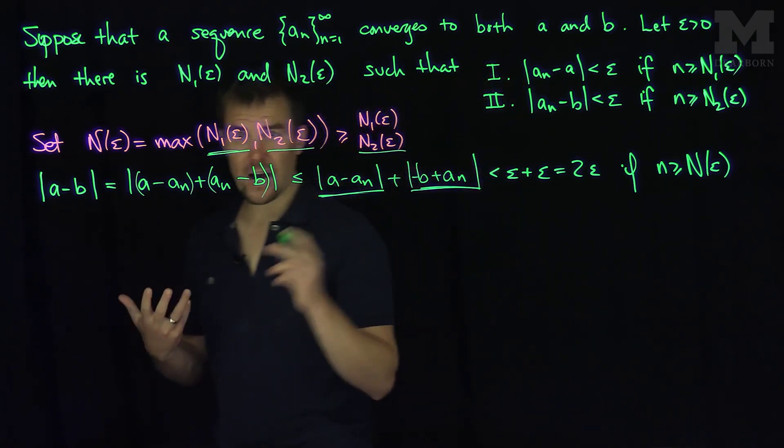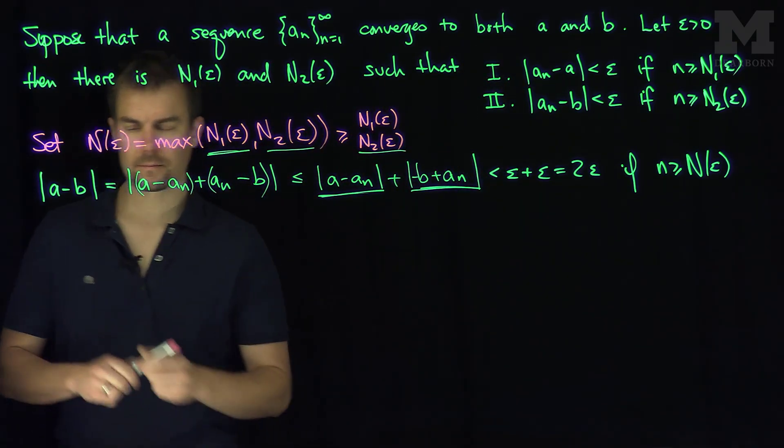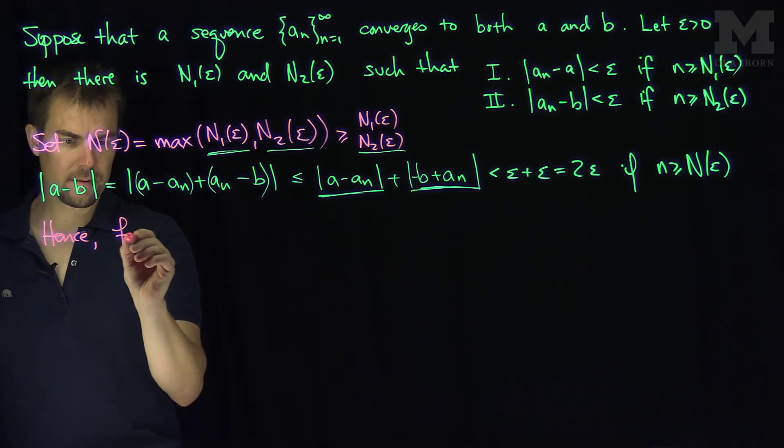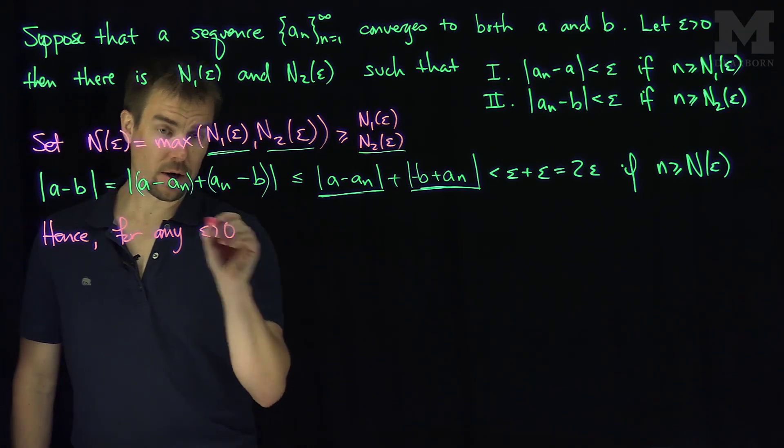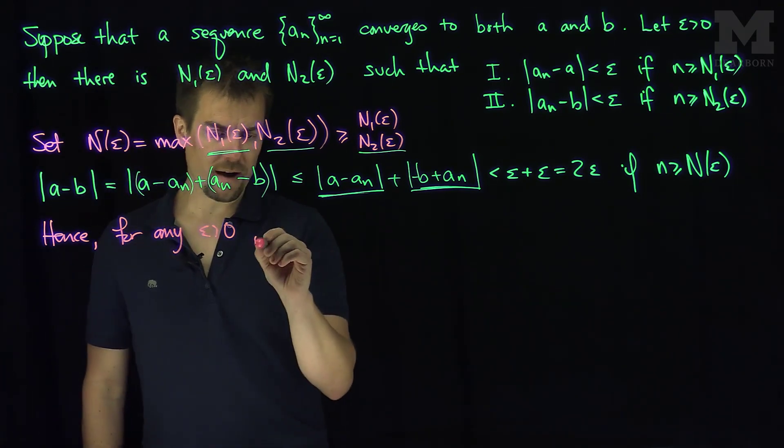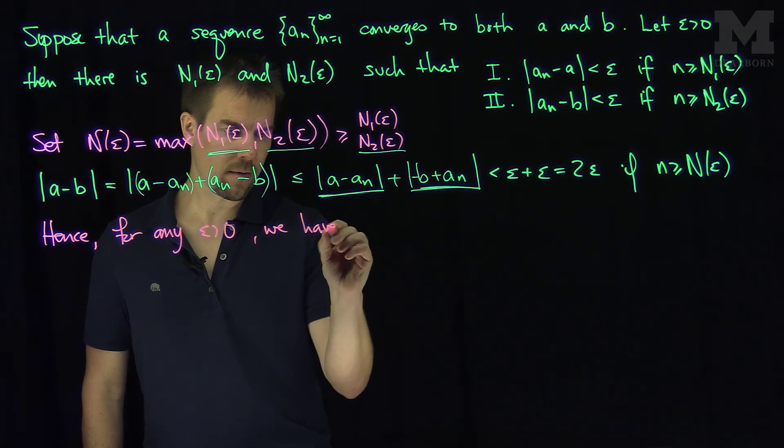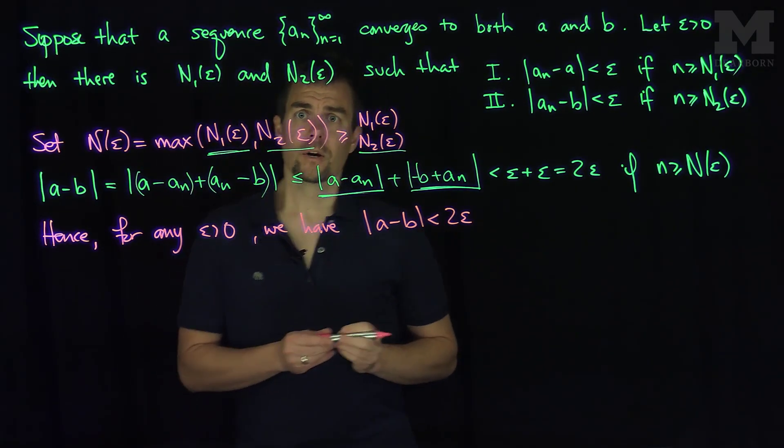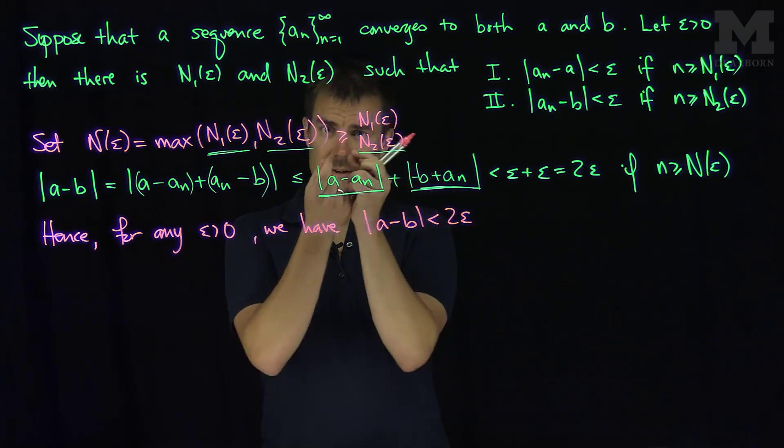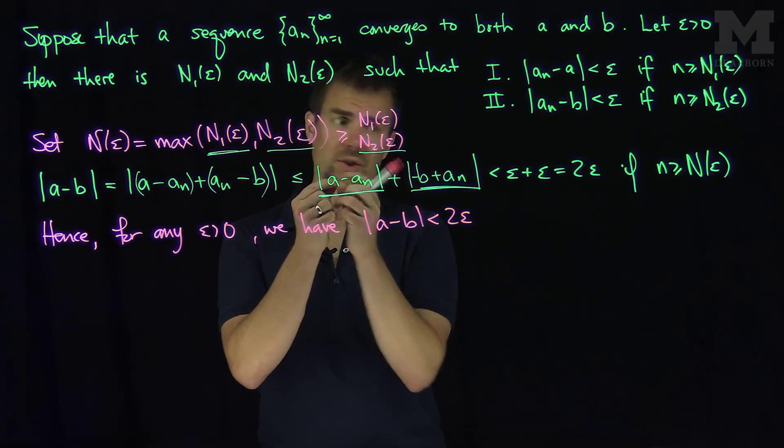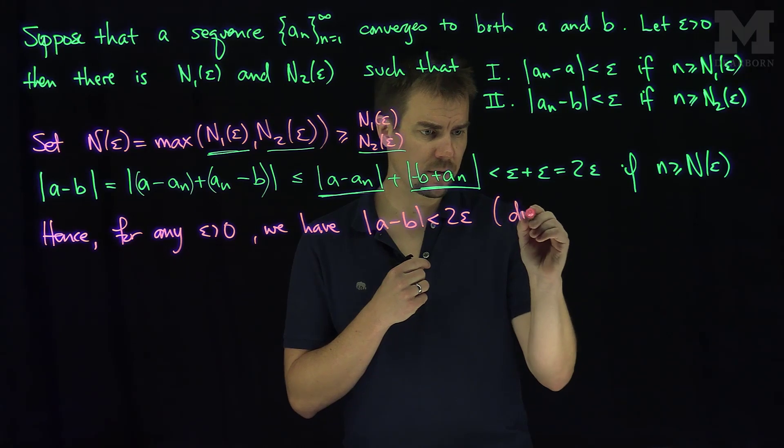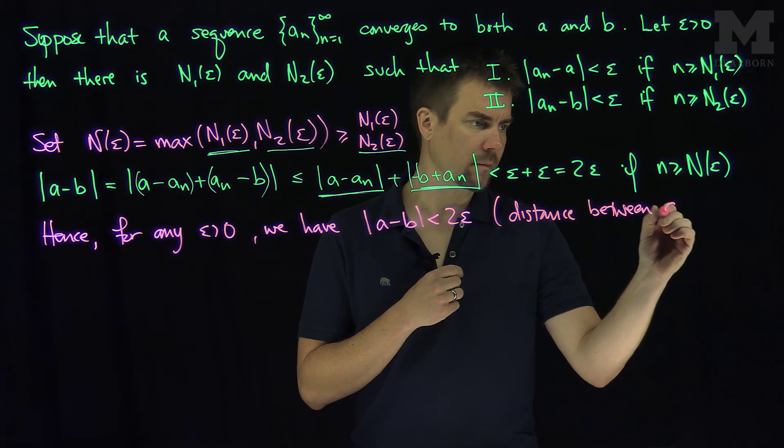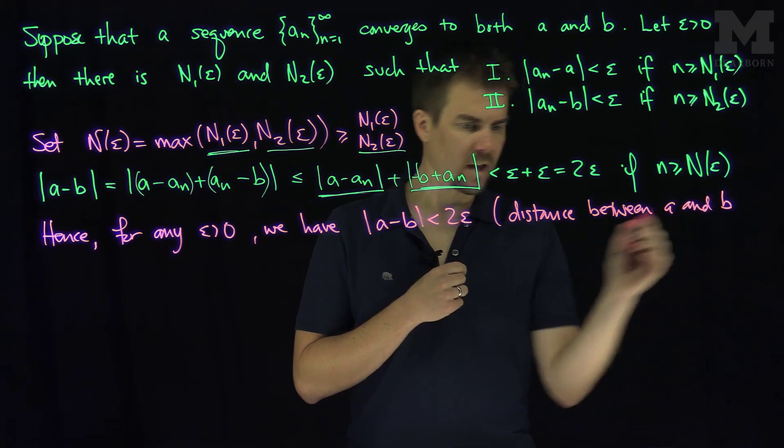So now our conclusion is the following. Hence, for any epsilon greater than zero, we have that the difference between a and b is less than 2ε. So 2ε is an arbitrarily small number, so the distance between a and b can be made arbitrarily small.